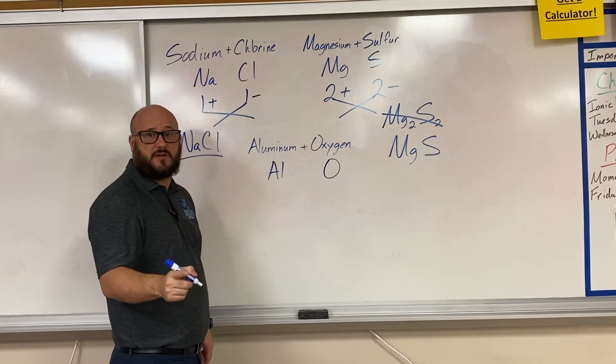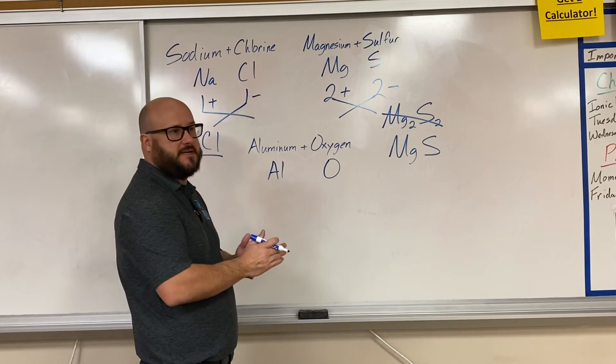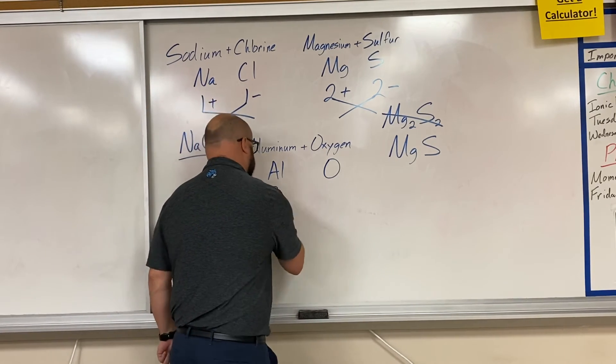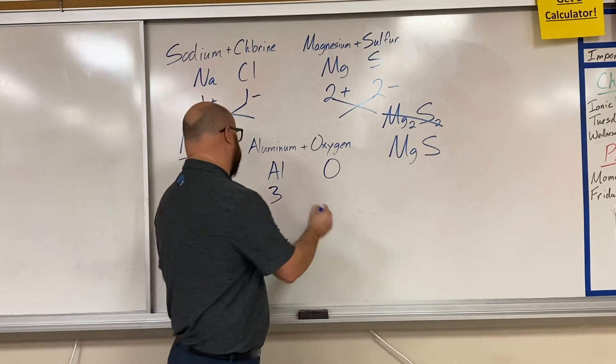Aluminum's 3 valence electrons are going to go bye-bye. It's easier to lose 3 than to gain 6. It's a metal, so it's positive.